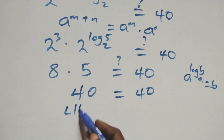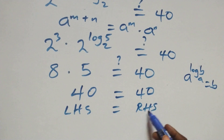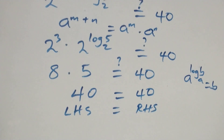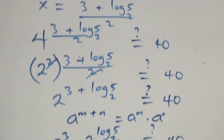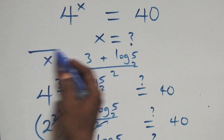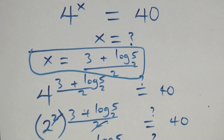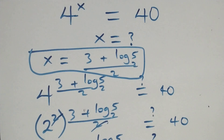The left hand side equals the right hand side, and therefore we conclude that x equals three plus log five to base two, all over two, satisfies the given problem. Thank you for watching — don't forget to subscribe for more videos, turn on the notification bell, share the video, give a thumbs up, and put your comments. See you next class, bye for now.